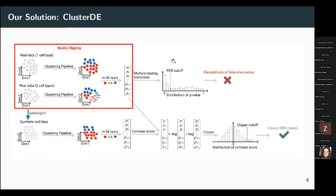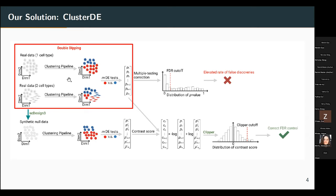Therefore, we propose our own solution: ClusterDE. The illustration of our method shows the double-dipping problem in a red box with two possible cases. In the first case, the real data contains only one cell type, and you use a clustering algorithm to divide it into two clusters — meaning those two clusters are definitely unreliable.